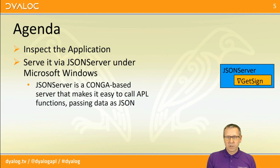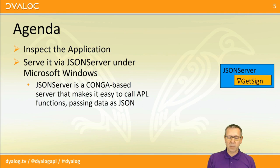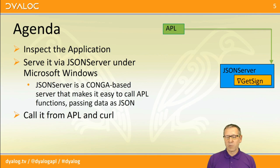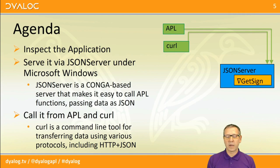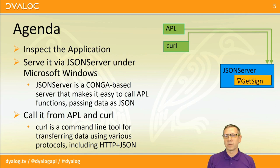The main technology we're going to be looking at is something we've just created called JSON server. I'm going to start showing that on Microsoft Windows. It's a Conga-based TCP server application that makes it easy to call APL functions with the argument coming in as JSON format and the results also being passed back in JSON. Once we've got that up and running we're going to test it from APL and then from the command line using curl, which is available to Linux users and can also be installed on Windows.